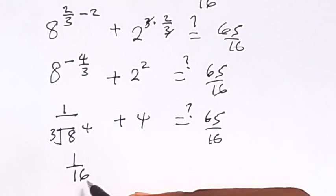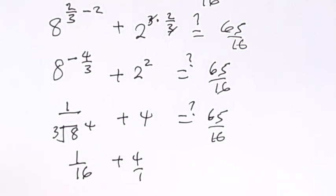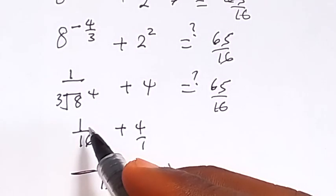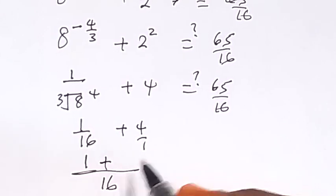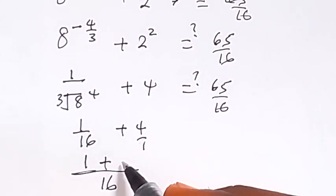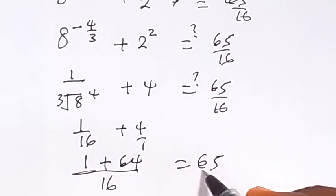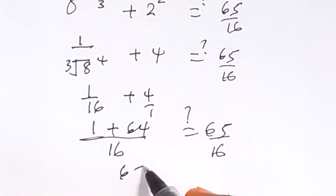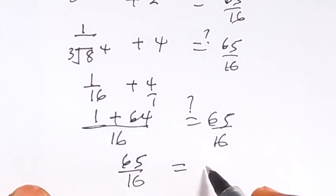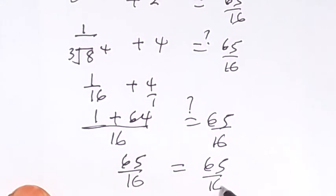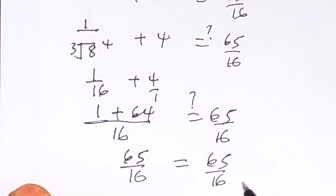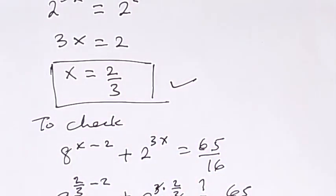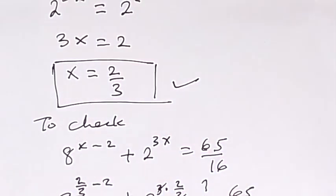So we have 1 over 16 plus 4. Bringing it together with a common denominator of 16: 1 over 16 plus 64 over 16, which gives 65 over 16. This equals 65 over 16. The left-hand side equals the right-hand side, which confirms that our solution x equals 2 over 3 is correct.